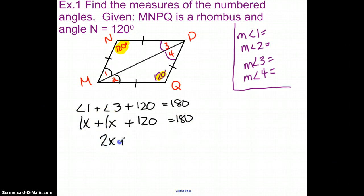So 2x plus 120 equals 180. Subtract 120 from both sides. 2x equals 60. And if I divide by 2, I get x equals 30.